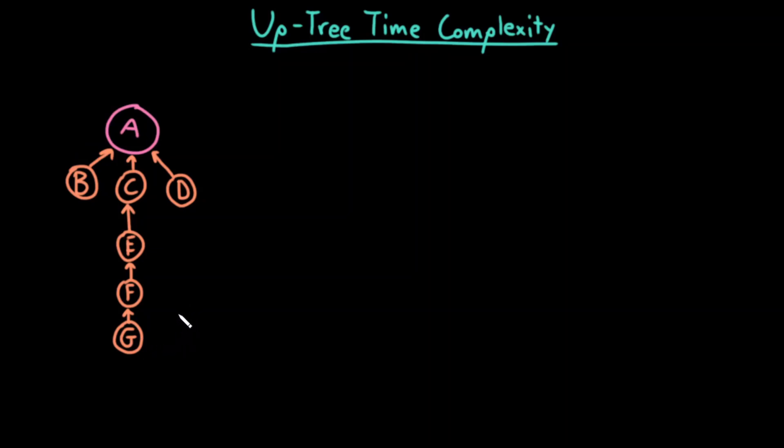First remember that the union operation is essentially given two nodes you perform find on each of those two nodes, and then the resulting sentinel nodes you perform a constant time pointer assignment. You just make the parent pointer of one of them point to the other.